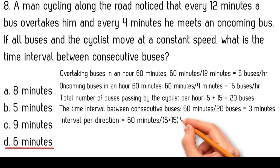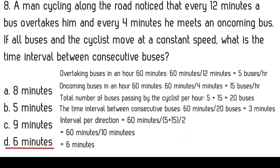Considering that buses moving in opposite directions meet the cyclist separately, the actual calculation for interval per direction is double the number of buses. Therefore, interval per direction equals 60 minutes divided by 20 buses divided by 2, which equals 60 minutes divided by 10, equals 6 minutes.